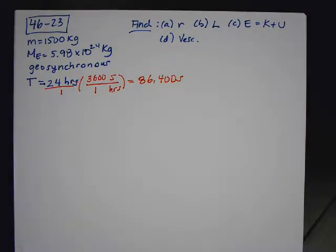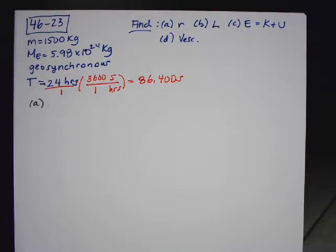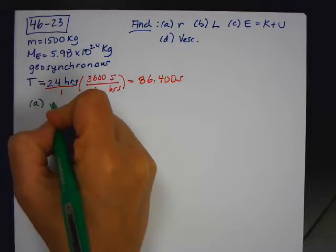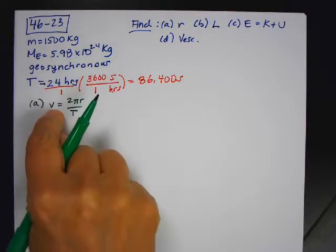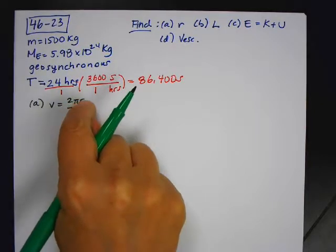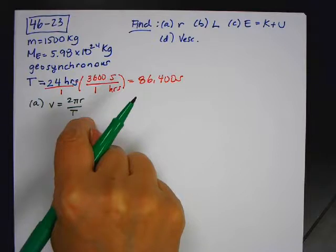So part A says, what is the radius? Now, you can have substituted in your calculator the equation, but let's just go ahead and derive the equation. So we know that V is equal to 2πR over T, because speed is distance over time. So the distance around a circle is 2πR. The time it takes to complete one cycle is the period.